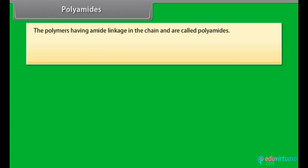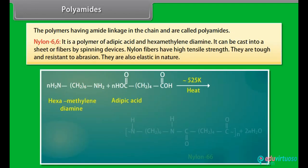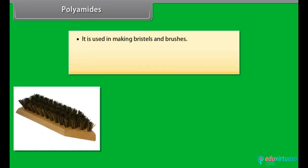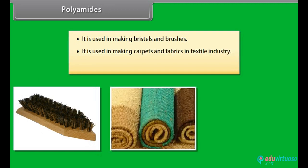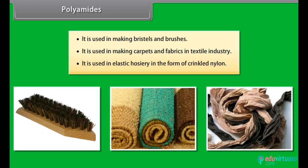Polyamides: the polymers having amide linkage in the chain are called polyamides. Nylon-66: it is a polymer of adipic acid and hexamethylene diamine. It can be cast into a sheet or fibers by spinning devices. Nylon fibers have high tensile strength. They are tough and resistant to abrasion, and also elastic in nature. It is used in making bristles and brushes, carpets and fabrics in the textile industry, and in elastic hosiery in the form of crinkled nylon.